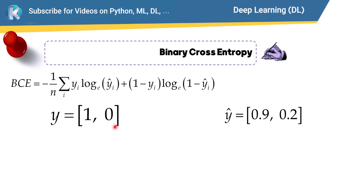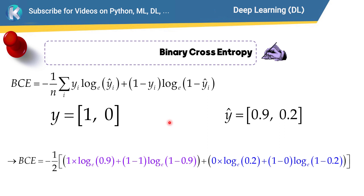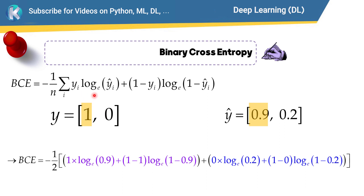Let's walk through the example. The calculations for the first data point are shown in purple and for the second in blue. For the first data point, the actual label is 1 and the prediction value is 0.9. So we compute: 1 × ln(0.9) + (1 − 1) × ln(1 − 0.9).